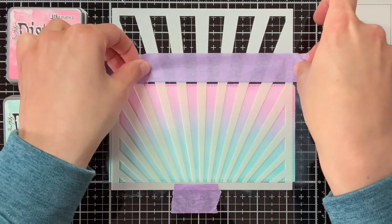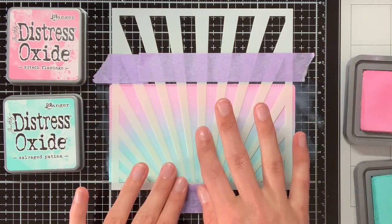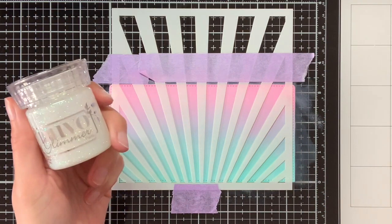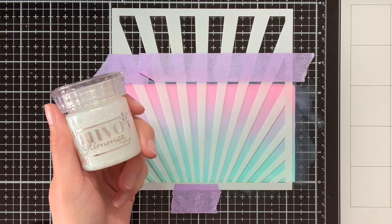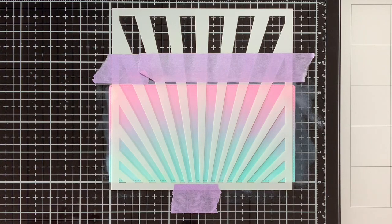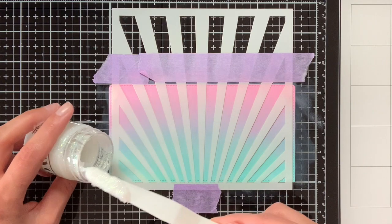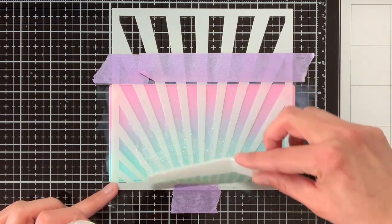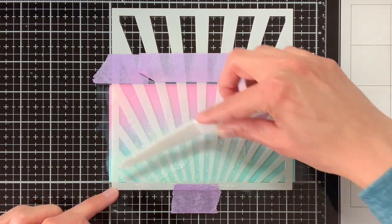My background panel is already adhered with tape to my glass media mat and now I am making sure that the stencil will also be adhered well so it will not move on me when I start working with the Nuvo Glimmer paste. The color of this jar is Moonstone, so it is basically transparent, so it will pick up the colors underneath.